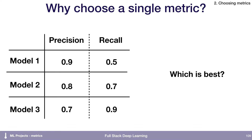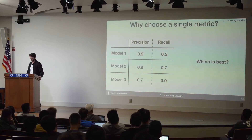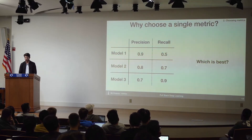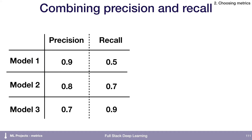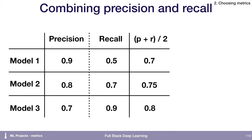Why is it important to choose a single metric? Suppose we're comparing three models and trying to decide which is best, and they have different precision and recall numbers. Which model do we actually pick? It's not obvious from this chart. There are a number of different strategies you can use to combine metrics. One is to simply average them — if we do that, model three would jump out as being the best.